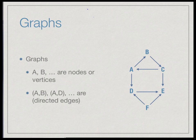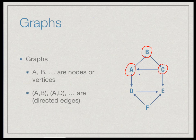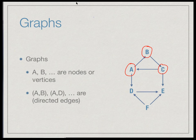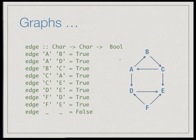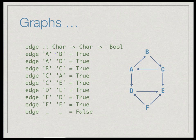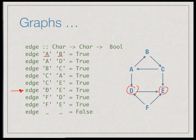A graph is a picture like we see here — we have vertices a, b, c, d connected by arrows called edges. In this particular graph the arrows are directed, so we have an edge from a to b but not necessarily from b to a. We can represent a directed graph in Haskell by a function which tells us which pairs of vertices are connected by an edge. For convenience we use characters as vertex names. The edge relation says: given vertices a and b, is there an edge? For example, since there is an edge from d to e, we would have `edge d e = True`.